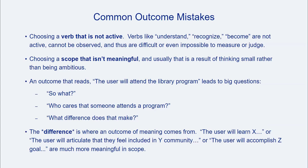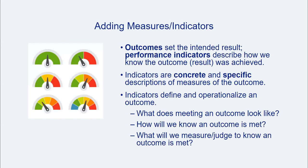Librarians seeking to use outcomes as a focus for assessment work should be aware of a few common outcome mistakes. These include using verbs that aren't active, and therefore not judgeable, measurable, or observable; stopping short on the expected outcomes for users, usually out of a fear that the user experience won't deliver on a more ambitious or desirable outcome; or missing the outcome focus entirely, usually due to focusing on something perceived as easy to measure. For those who wish to include measures or indicators of an outcome in guiding the assessment project, a bit more should be said about how to do this well. Outcomes should be focused on the intended result of library engagement. The indicator piece describes to what degree the outcome—that is, the result—is achieved. Adding indicators can help clarify what meeting an outcome looks like, makes clear how we as librarians or assessors know an outcome has been met, or provides details about what we will measure or judge to know the outcome has been met.